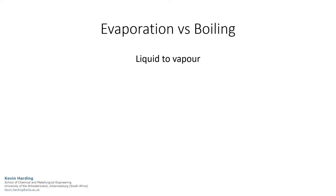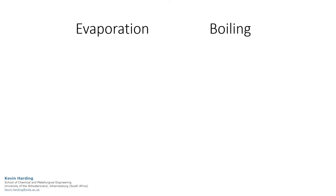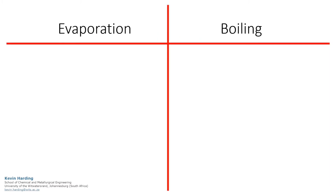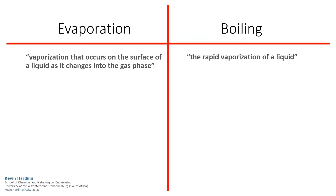Evaporation and boiling are both processes to convert a liquid to a vapor. However, each is slightly different. Evaporation is defined as the vaporization that occurs on the surface of a liquid, while boiling is the rapid process of vaporizing a liquid.